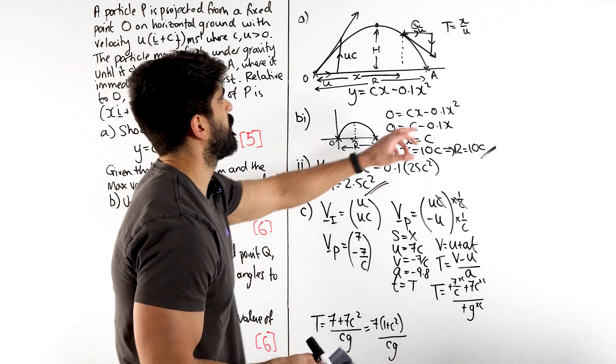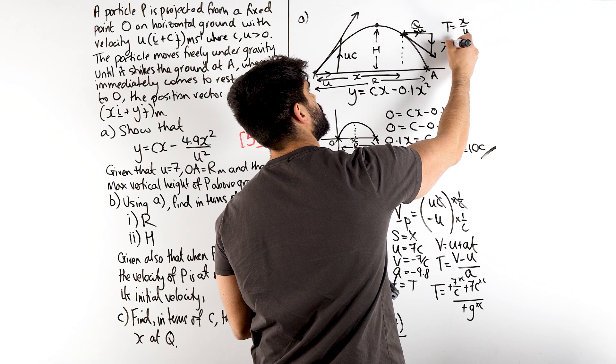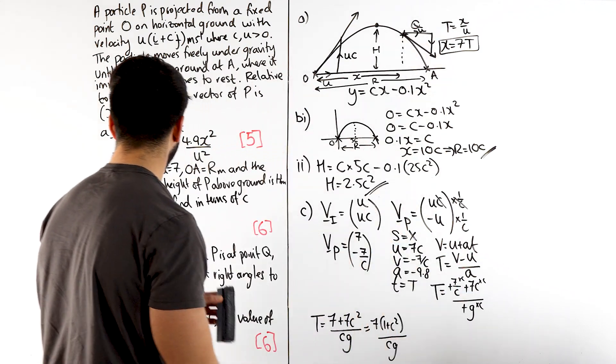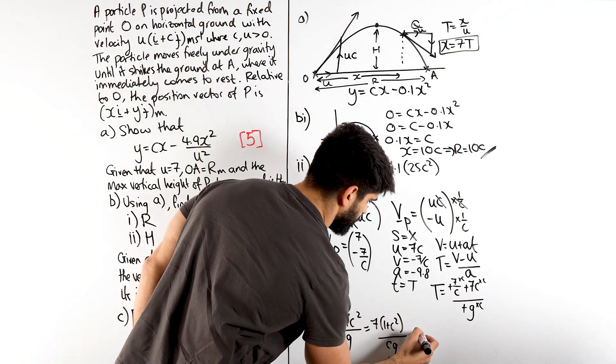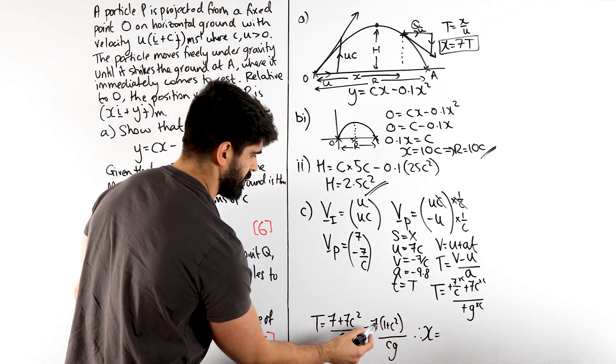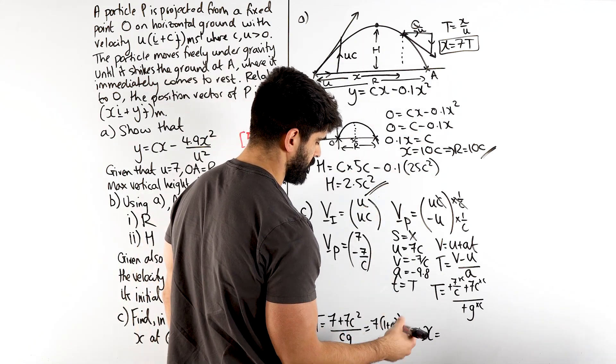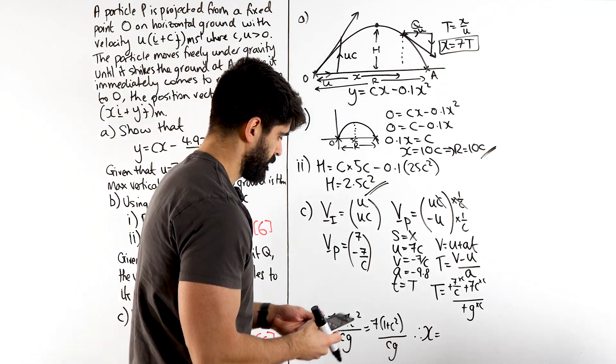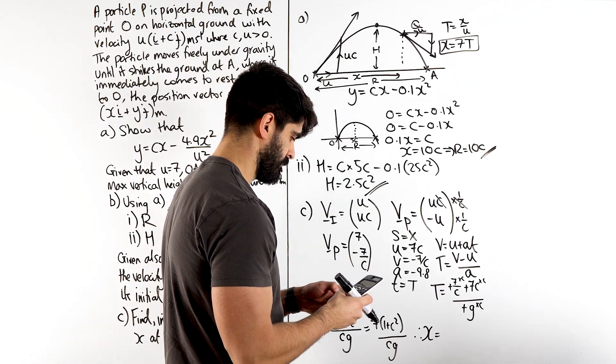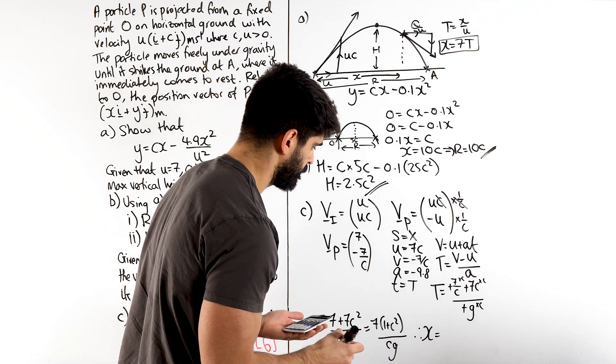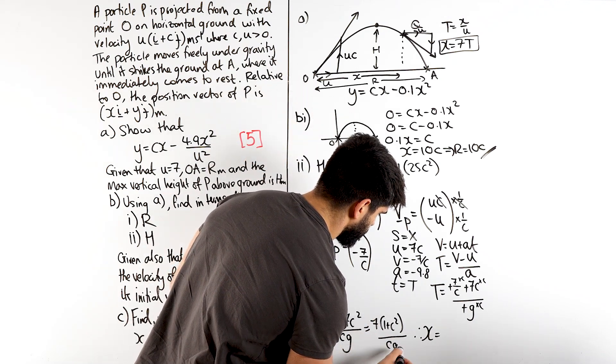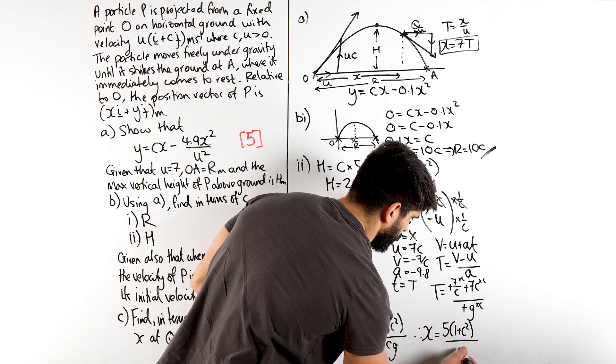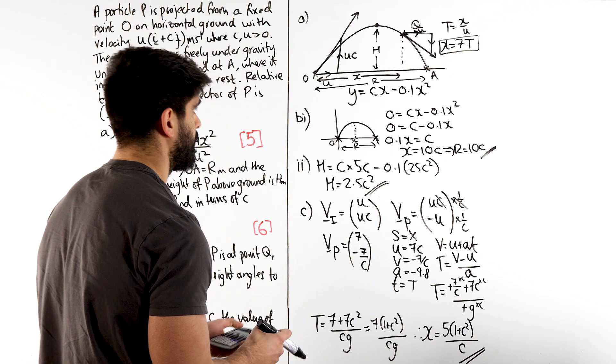And then we can now work out X. X is UT, where U is 7 now. Yeah, U is 7. So, therefore, X is 7 times 7, so 49 over G. But that gives me a nice number, surely. 49 divided by 9.8 is 5. So, this 7 squared over G gives me 5, 1 plus C squared, all over C. And that is my answer.